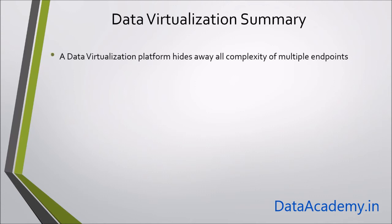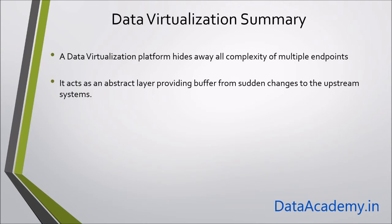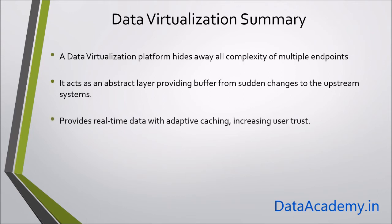So a quick summary: a data virtualization platform hides away all complexity of multiple endpoints from the upstream systems. It acts as an abstract layer providing a buffer from sudden changes — meaning an upstream system could suddenly change its interface, its file format, or you may completely replace the system with a different one — and all of those changes can still be managed within the data virtualization platform.